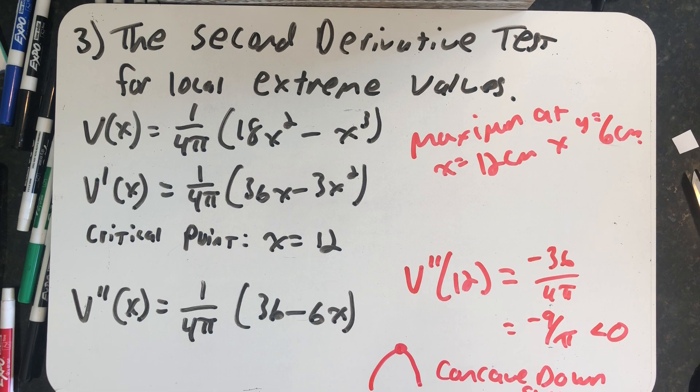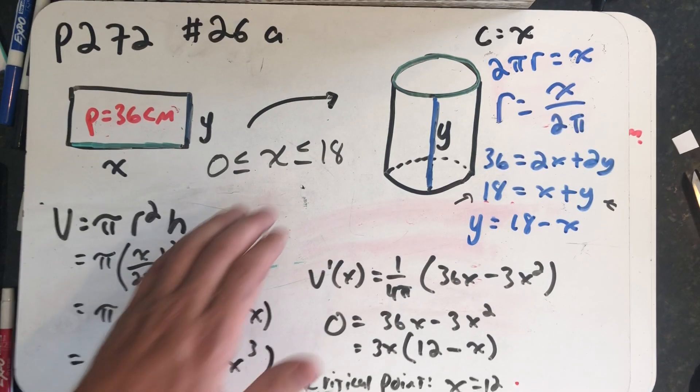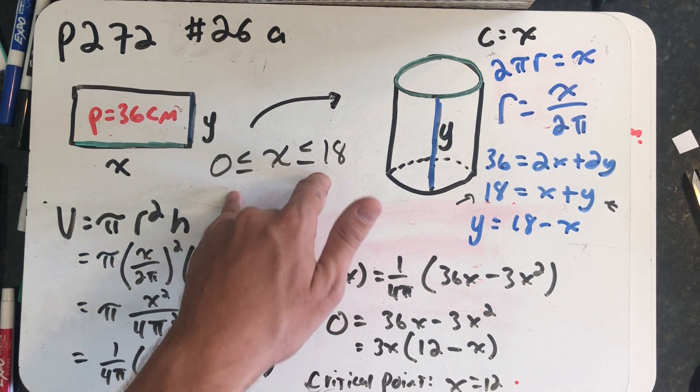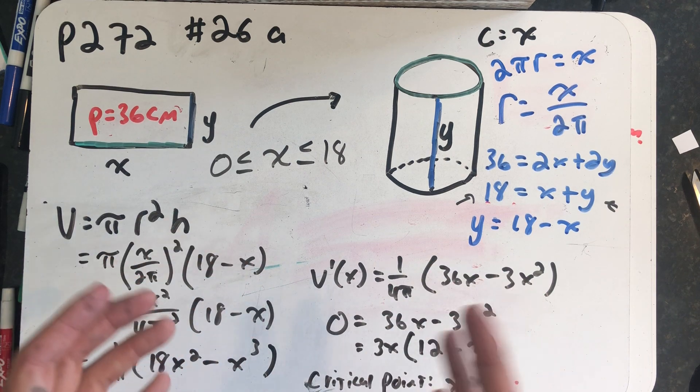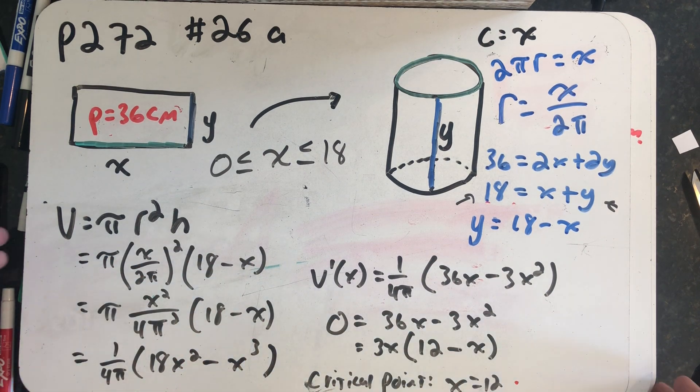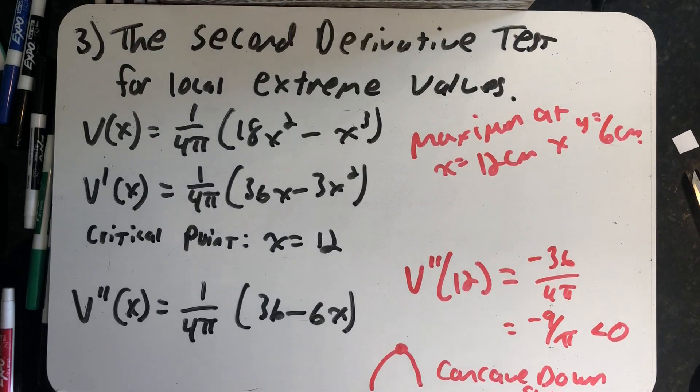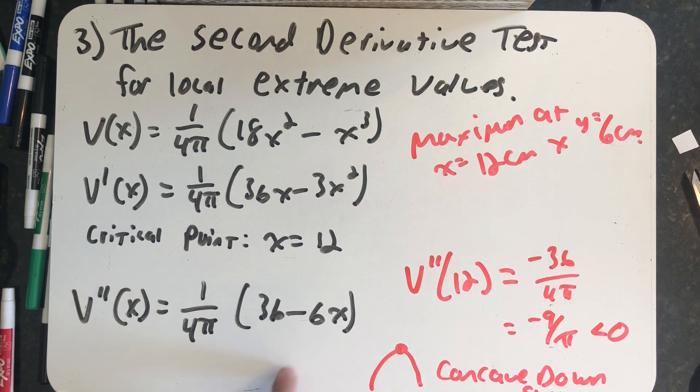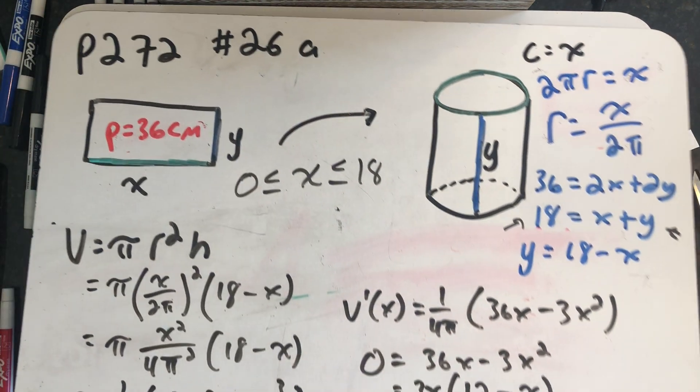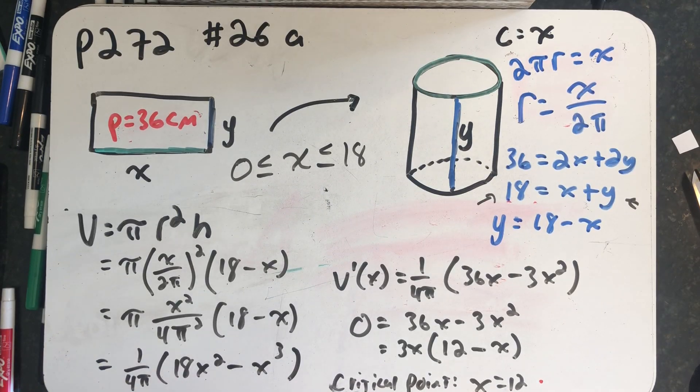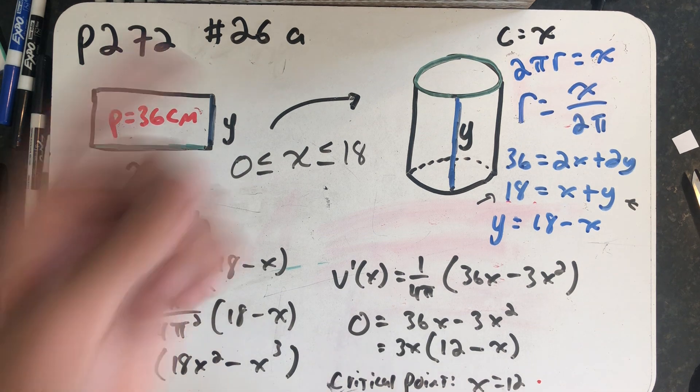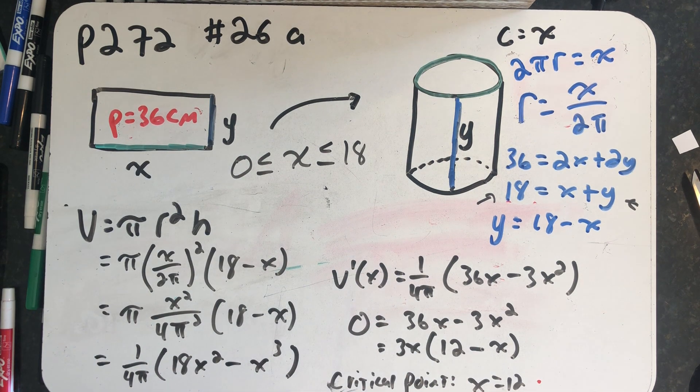I find that a lot of my students like using the first derivative test. But on a problem like this, I always like to show folks that the second derivative test is easy to use because the second derivative was so easy to find. Most of the time when we're doing an optimization problem, we only have to use one of the methods, but I thought it would be fun to try all three on this problem.